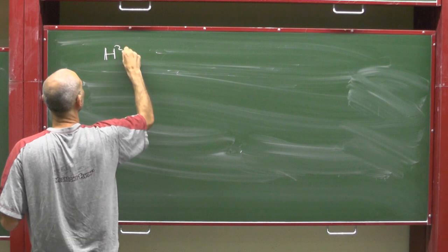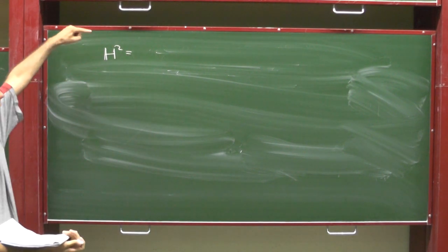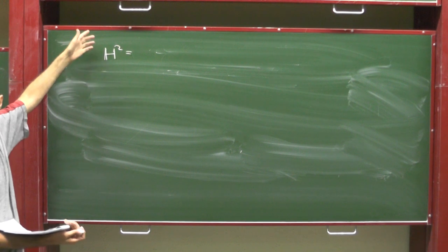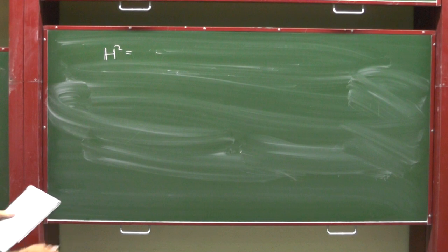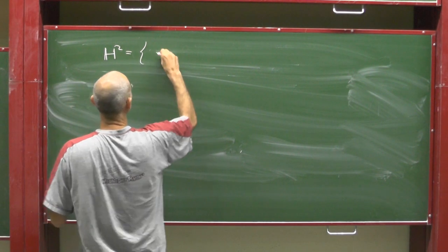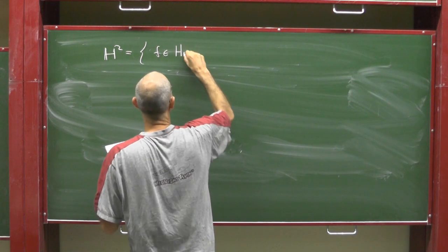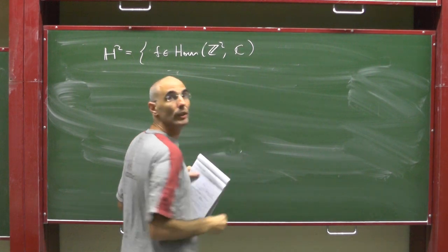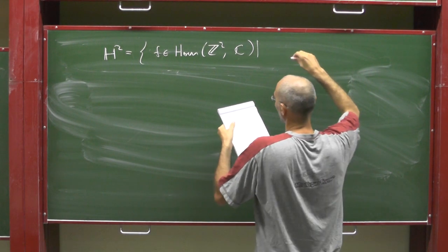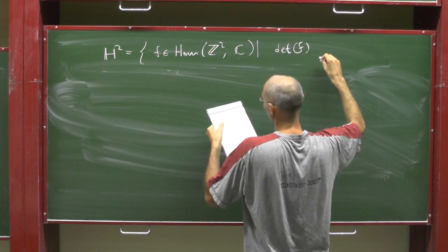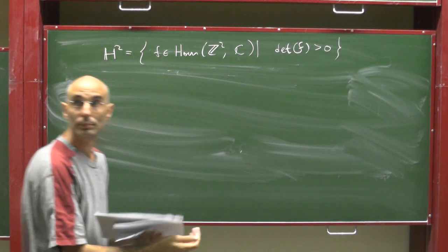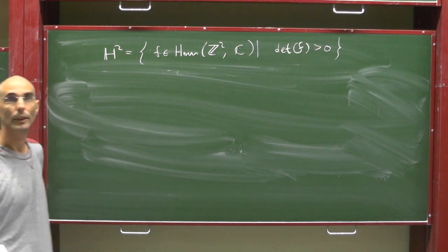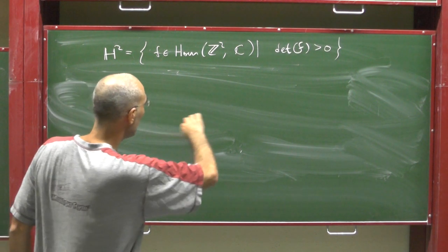Let me define H2. I'm defining the hyperbolic plane, but I don't want to do any hyperbolic geometry in this course. If you do know it, sorry, you can think of other things. If you don't, then please bear with me. Take all functions, homomorphisms from Z squared to the additive group C, but make sure that they have positive determinants. The determinant is, if you wish, the volume of the image of the standard fundamental domain in Z.